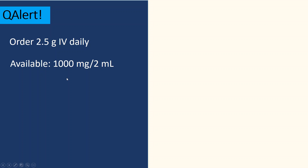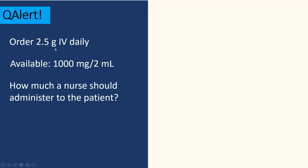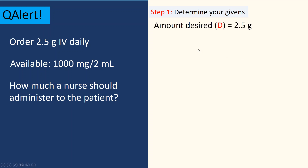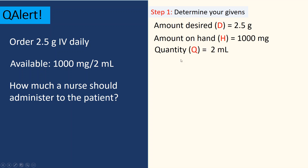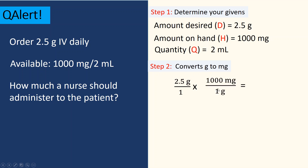Another example: an order for 2.5 grams IV daily, and the available IV strength is 1000 milligrams per 2 milliliters. Step one: identify givens — desired is 2.5 grams, on hand is 1000 milligrams, and quantity is 2 milliliters. Step two: convert units — set up dimensional analysis: 2.5 grams times 1000 milligrams per gram; grams cancel out, giving a desired amount of 2500 milligrams.